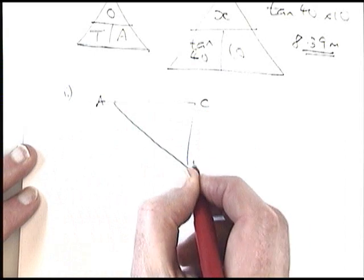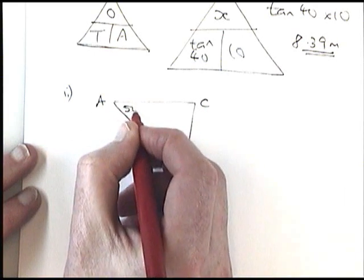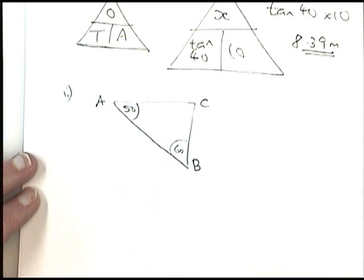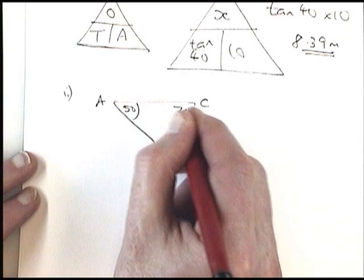It's in triangle ACB. And I know I have a 50 degree angle there. I know I have a 60 degree angle there. And they add up to 110. So actually I know that's 70.